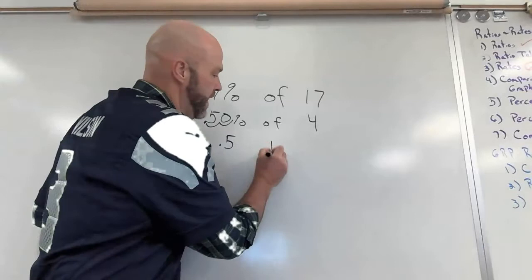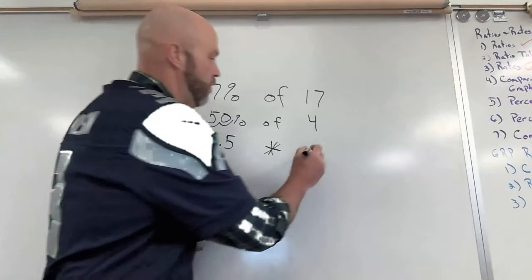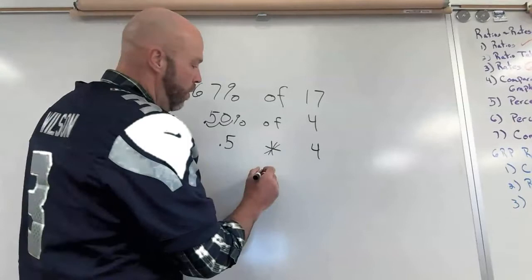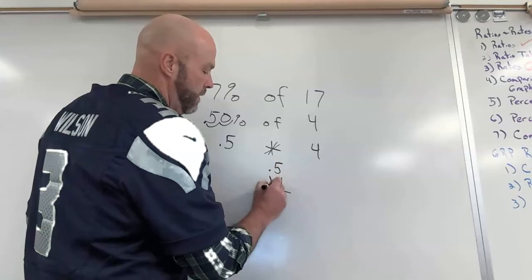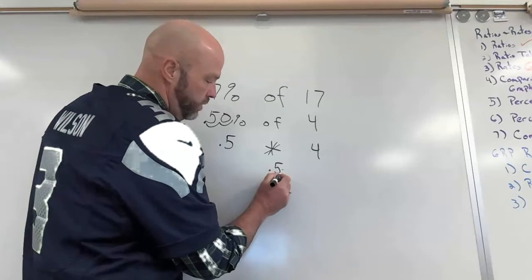The word of in math is times. 50 percent or five tenths times four. Now I could use my calculator. I know a lot of you are calculator addicts or I could just go five times four is twenty.